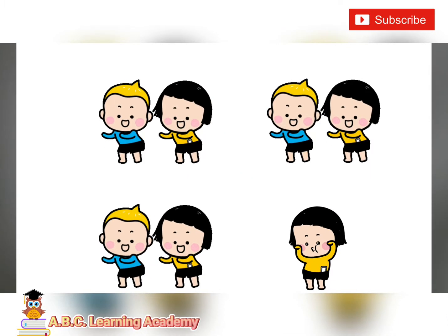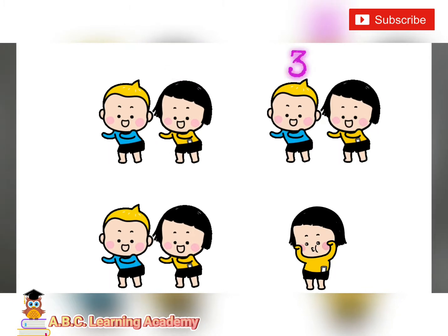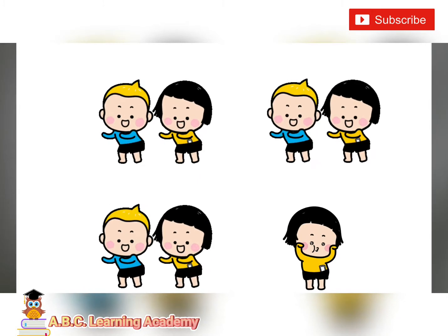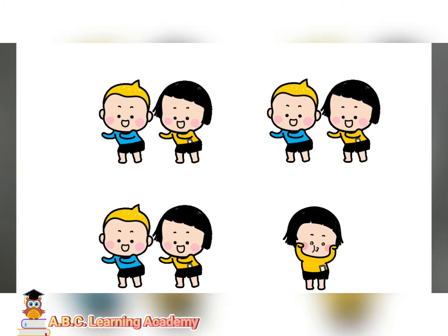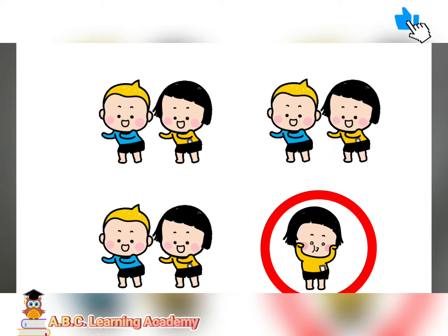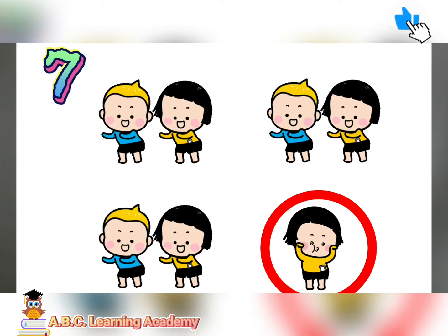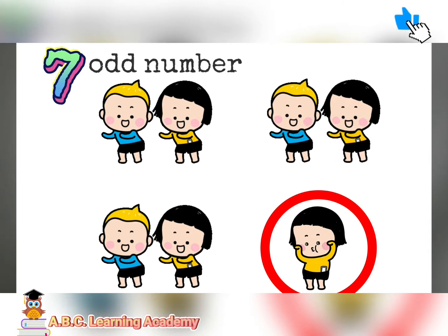Now, let's go to this clip. Let us count. One, two, three, four, five, six, seven. Are they all in pairs? No, because there's one child who is alone. She doesn't have any partner. Therefore, number seven is an odd number.